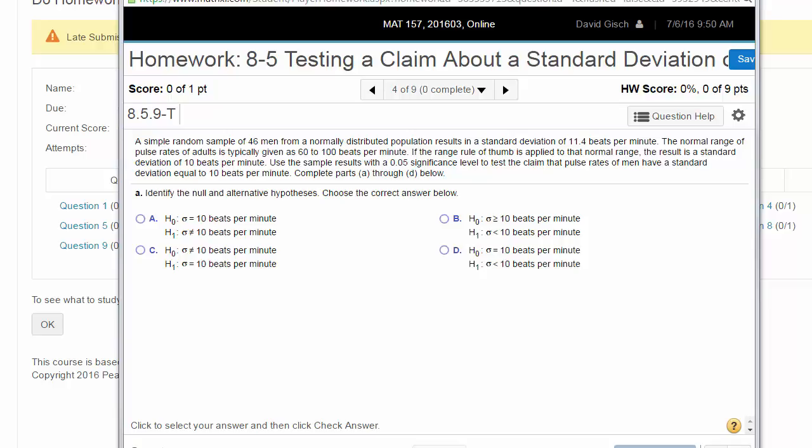All right, we're going to do a problem about a standard deviation hypothesis test. It says a simple random sample of 46 men from a normally distributed population results in a standard deviation of 11.4 beats per minute. The normal range of pulse rates of adults is typically given as 60 to 100 beats per minute. If the range rule of thumb is applied to that normal range, the result is a standard deviation of 10 beats per minute.